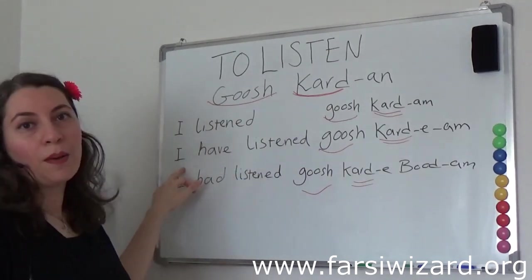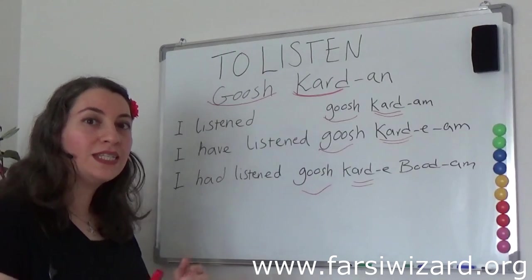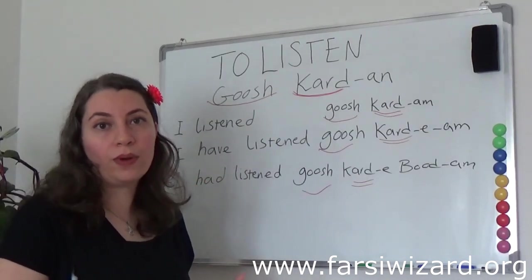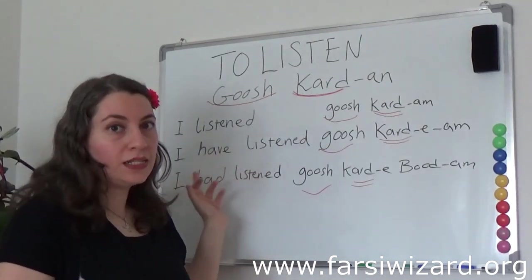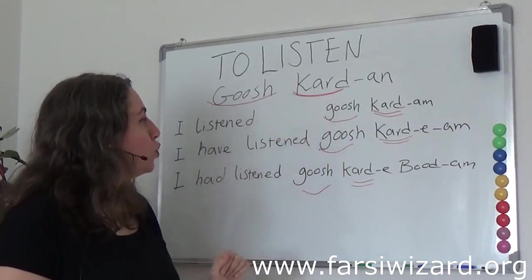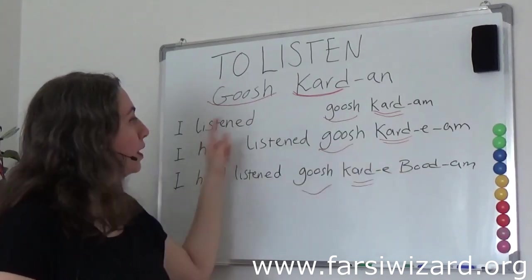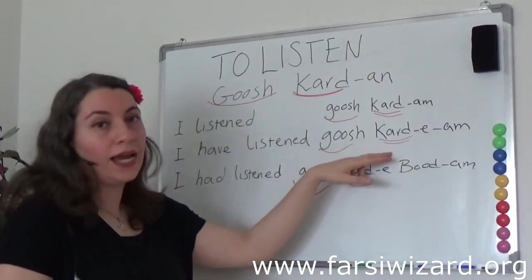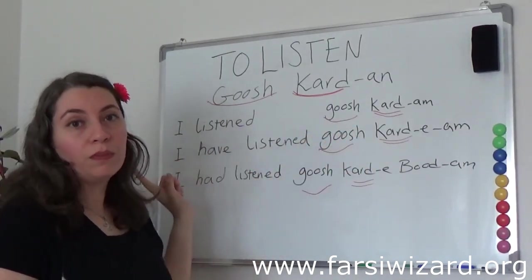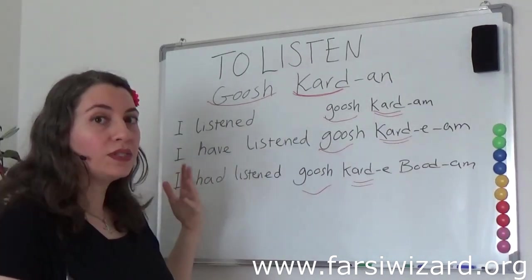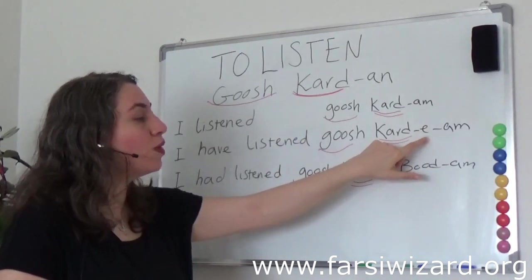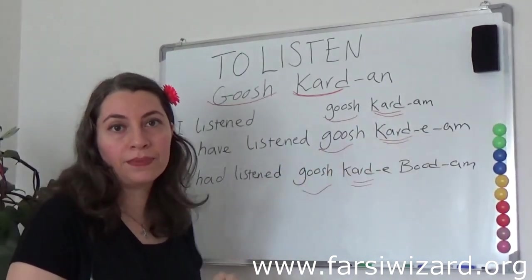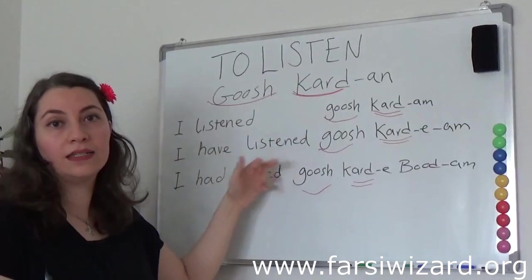Now let's focus on present perfect. If you remember from one of the recent lessons, present perfect for us is actually 'past transferred.' This means this tense is also made with the past stem. So the past stem is kardan — we have it here. The noun part is fixed; we don't change the noun; it stays where it is. So, gush kardan. And for the present perfect, we need to add a hook — the hook was 'e.' Gush karde am. This means 'I have listened.'